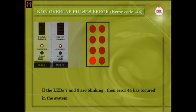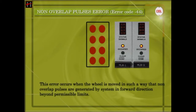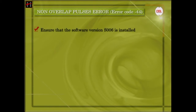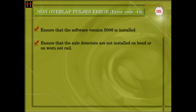If LEDs 7 and 3 are blinking, then Error 44 has occurred. This error occurs if the wheel is moved in such a way that non-overlap pulses are generated by the system in the forward direction beyond permissible limits. If the error is generated frequently, carry out the following checks: ensure that software version S006 is installed, and ensure that the axle detectors are not installed on curved lines or worn out rails.